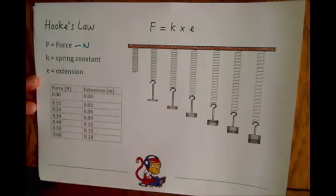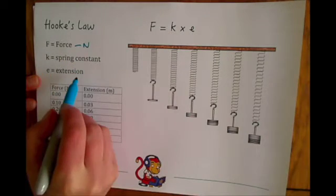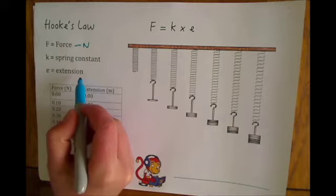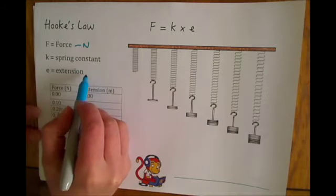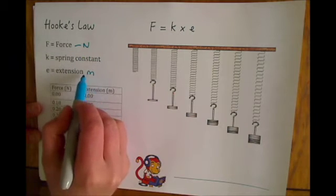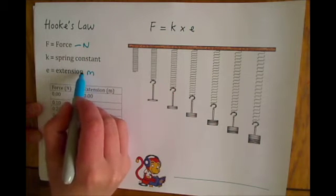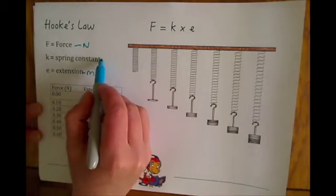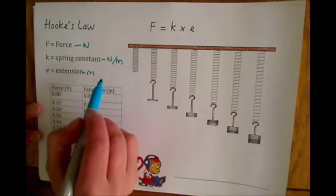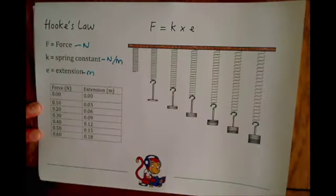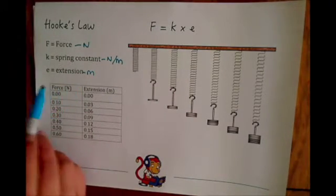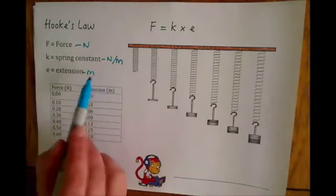Force is Newtons. And extension — you've got to watch out for this — it can be either in metres or sometimes you might see it in centimetres. I'm going to put it in metres for the purposes of this video. When the extension is in metres, then the spring constant is Newtons per metre. You might see the spring constant as Newtons per centimetre, and the extension in centimetres as well, so just watch out for that.